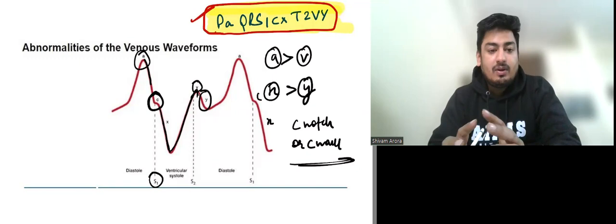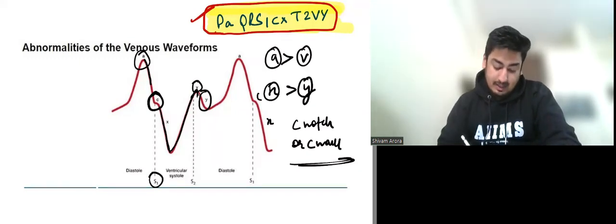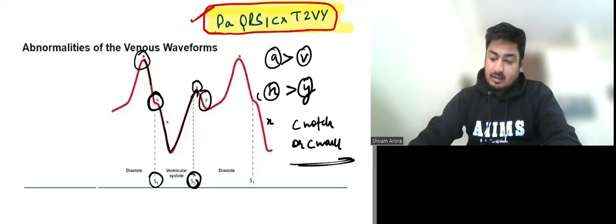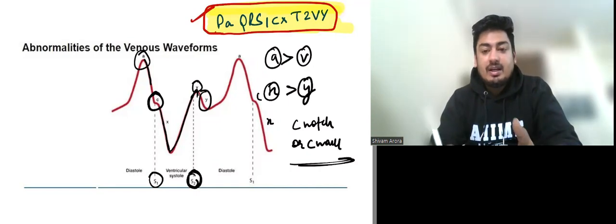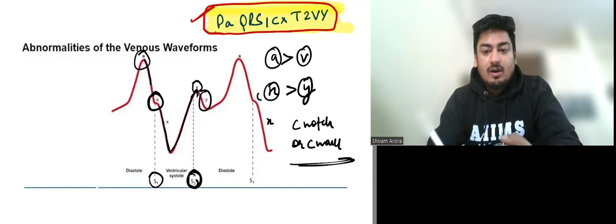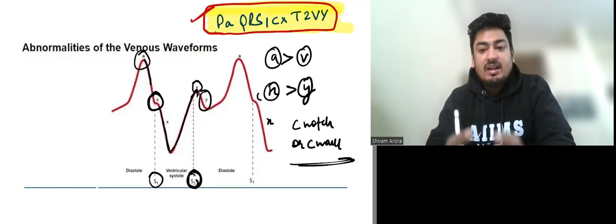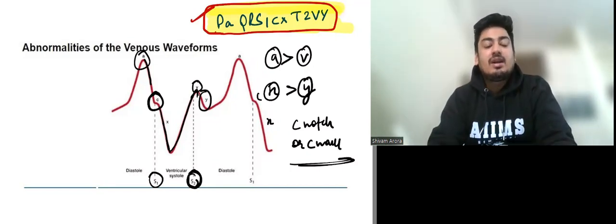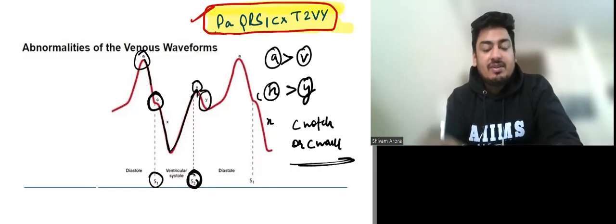S2 comes just before the v wave. S2 represents closure of the aortic and pulmonary valves, after which relaxation of the LV starts and LV pressure decreases. Blood fills the RA so RA pressure rises, then there is the v wave.